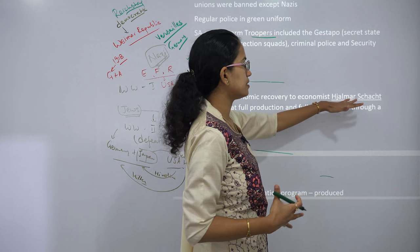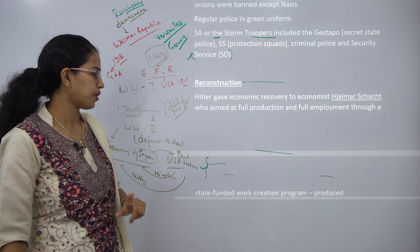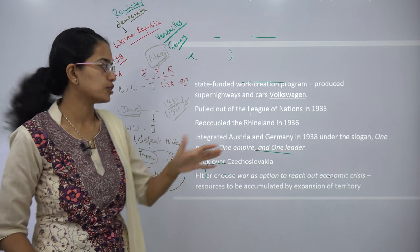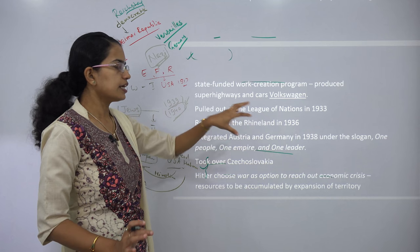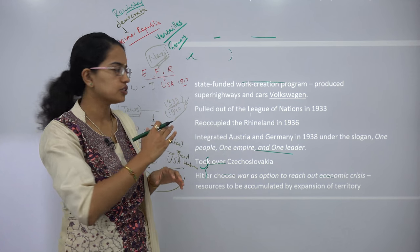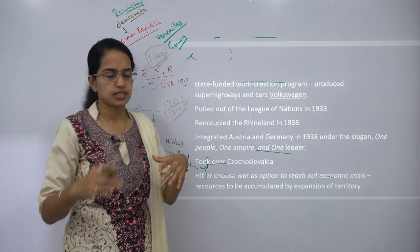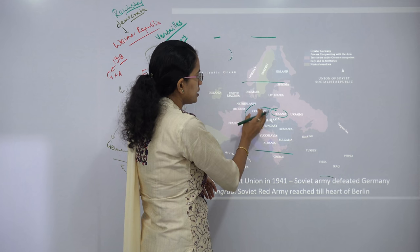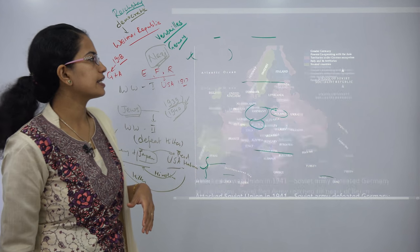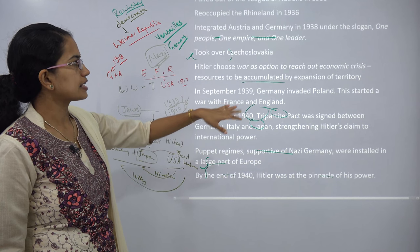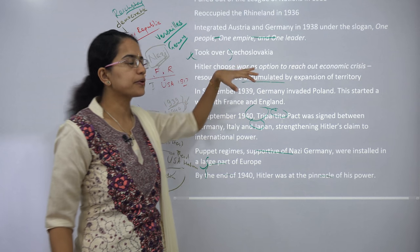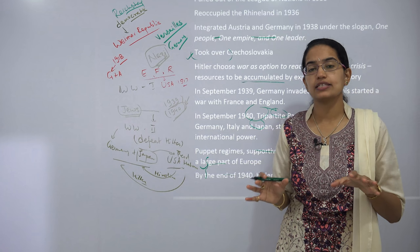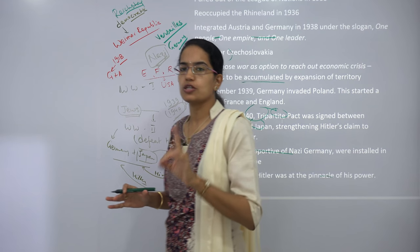Hitler had an economist named Hjalmar Schacht who talked about full production and full employment. Hitler created a state-funded program mainly for the production of highways and cars by Volkswagen. He pulled out of the League of Nations in 1933, reoccupied the area of Rhineland which had been taken away, and integrated Austria and Germany under the slogan of 'one people, one empire, one leader.' He slowly took control over Czechoslovakia and said that to come out of the Great Depression, the only solution was war.